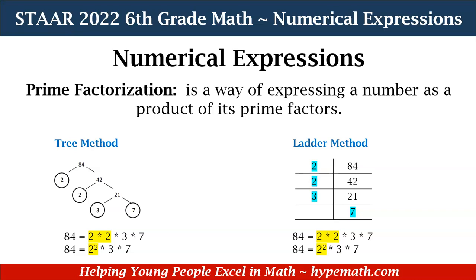Now let's look at the ladder method. All I'm doing is finding out what number can divide into 84 — and that's a prime factor. You always want to try to start with a prime factor if you can. If you can't, it's okay to start with whatever numbers you have and continue to dig down until you get the prime factors. We know 2 can go into 84, so 84 divided by 2 equals 42. 2 is a prime factor of 42, so 42 divided by 2 equals 21. For 21, the two prime factors are 3 and 7. So again, the prime factorization of 84 is 2 times 2 times 3 times 7.